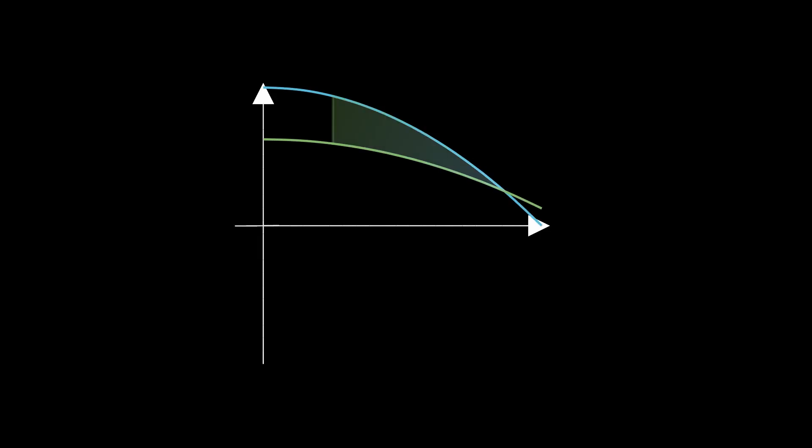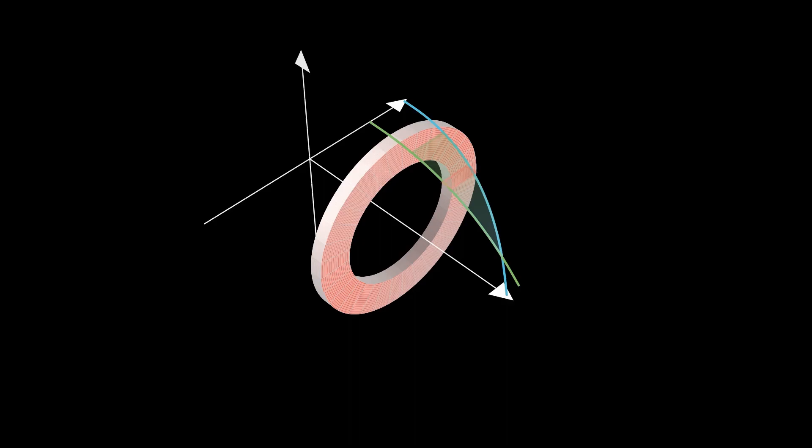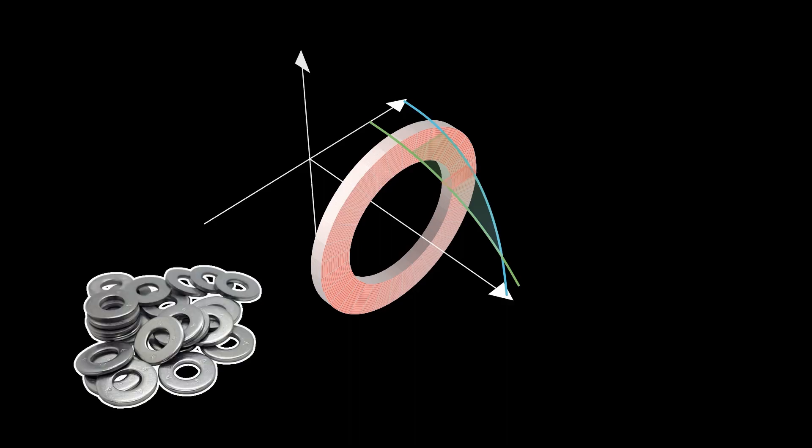So taking an approximating area and revolving it around the axis of rotation, which is the x-axis in this case, a thin hollow cylinder, or a washer, is generated. If you are unfamiliar with the term washer, these are what washers are, and these are generally used to evenly distribute the load in screws and other threaded fasteners.